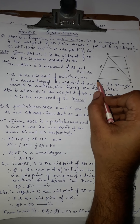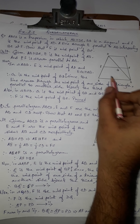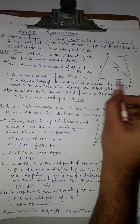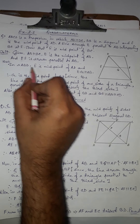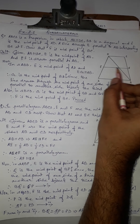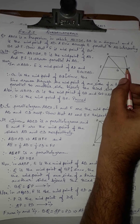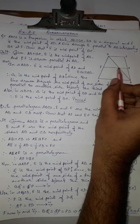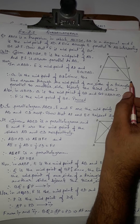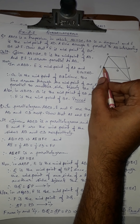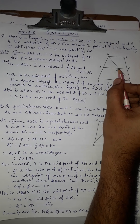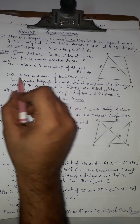Since E is the midpoint of AD and EF is parallel to AB, we can apply the converse of the midpoint theorem. Considering triangle ABD: E is the midpoint of AD and EG is parallel to AB — since EG is part of EF and EF is parallel to AB, EG is also parallel to AB.